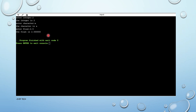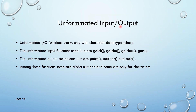That's all for formatted input and output. Now we will see unformatted input and output statements. Unformatted input/output functions work only with the character data type — we cannot use integer, float, or double. The unformatted input functions in C are: getchar, getch, getche, and gets. The unformatted output functions are: putchar, putch, and puts. Among these, some are alphanumeric and some handle only characters.